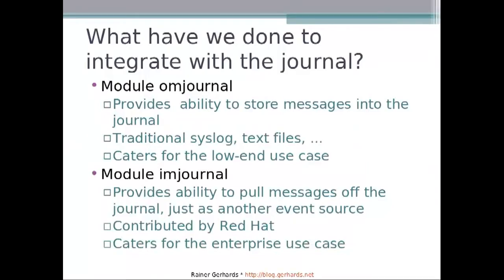What have we done to integrate with the journal? There have been two modules written: one output module and one input module. The output module is OM Journal and it provides the ability to store messages right into the journal. So it works with traditional syslog messages over the network, text files, database inputs, SNMP input, and all these things. It provides the ability to use the journal as your back-end database, which is probably most interesting for low-end use cases where no enterprise environment is available.